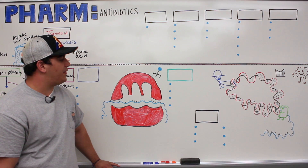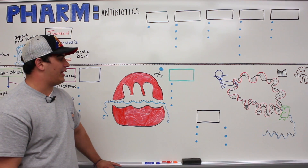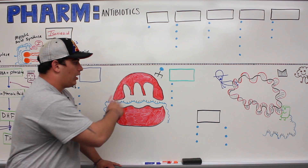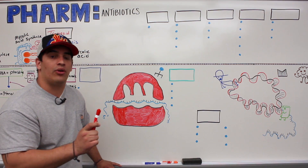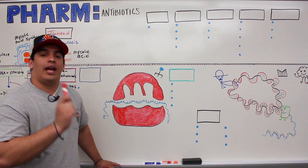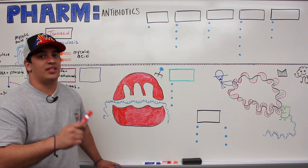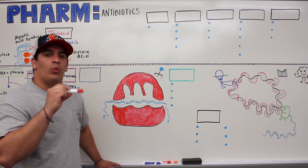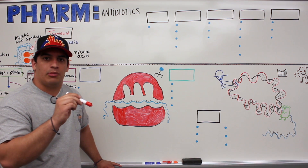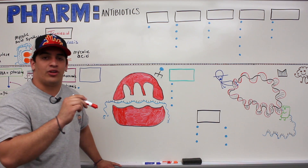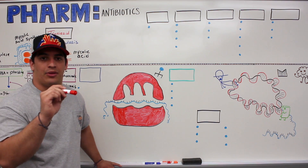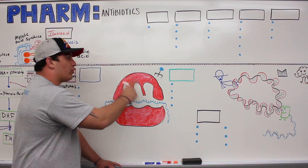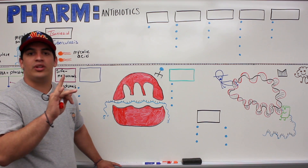In this video we're going to talk about the antibiotics that are specifically attacking protein synthesis. We've already covered in previous videos antibiotics targeting cell wall synthesis and function, and we also talked about antibiotics targeting the folic acid pathway. Now we're going to talk about the antibiotics that are targeting protein synthesis.